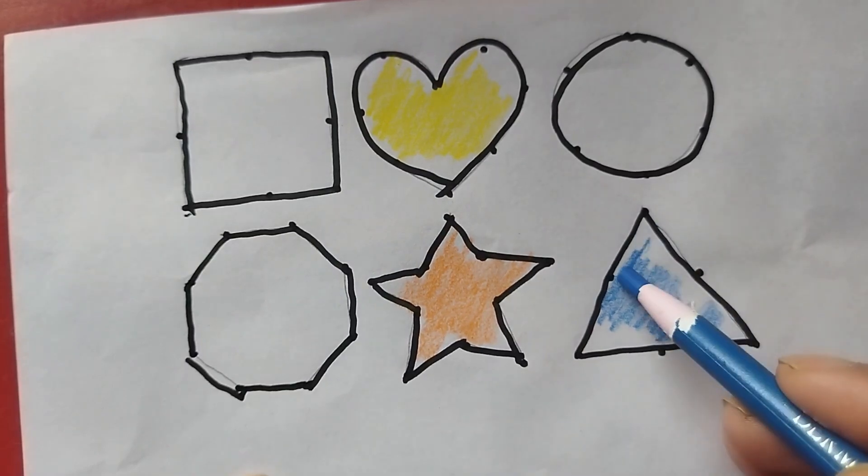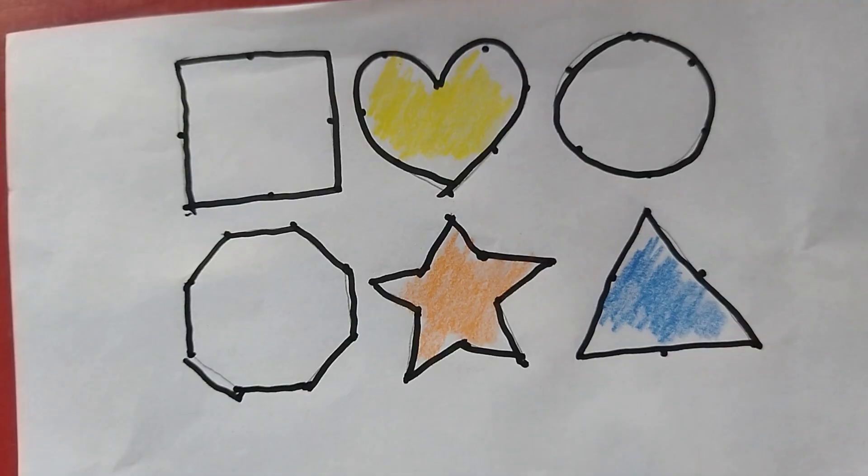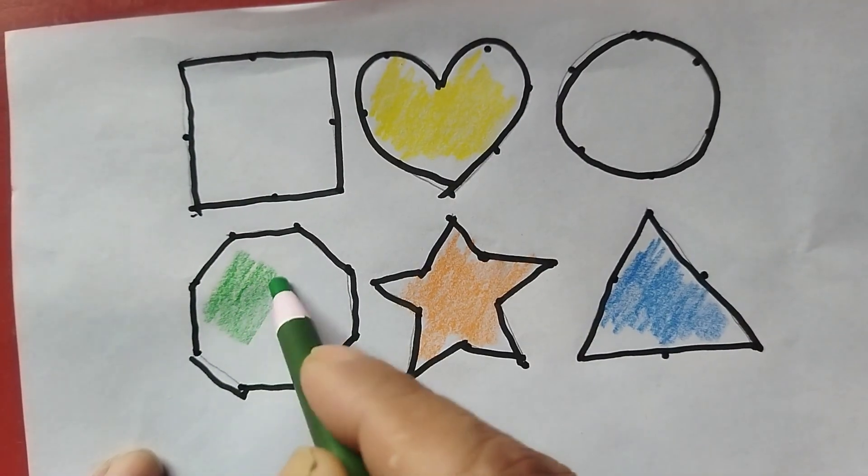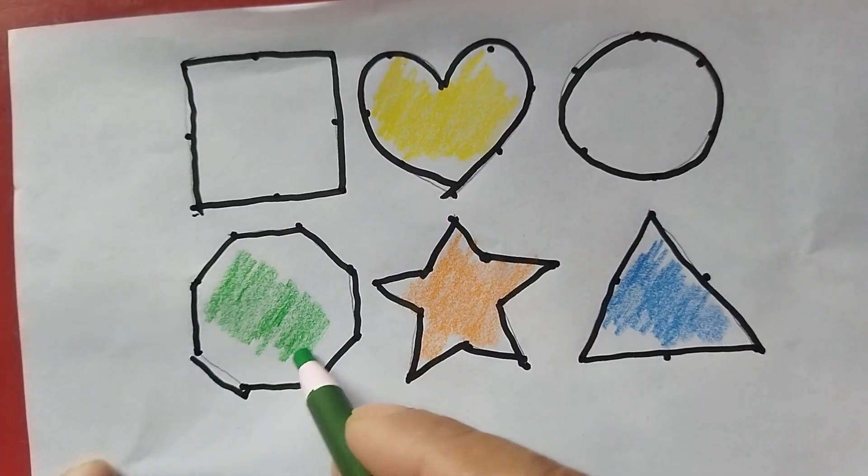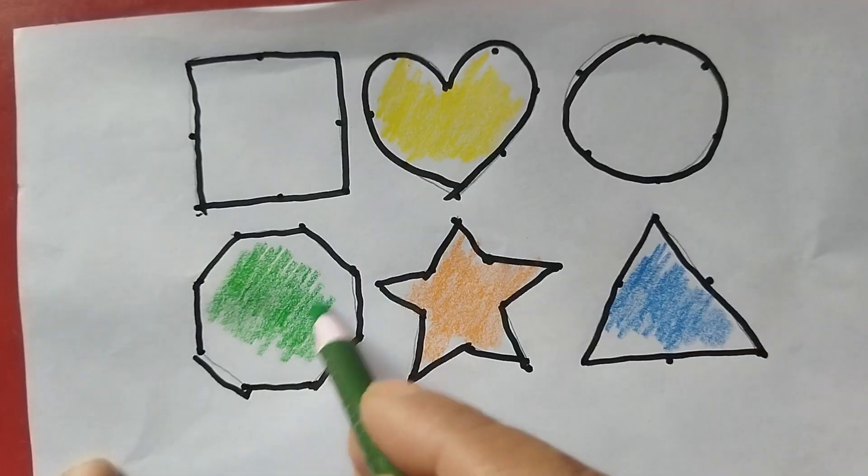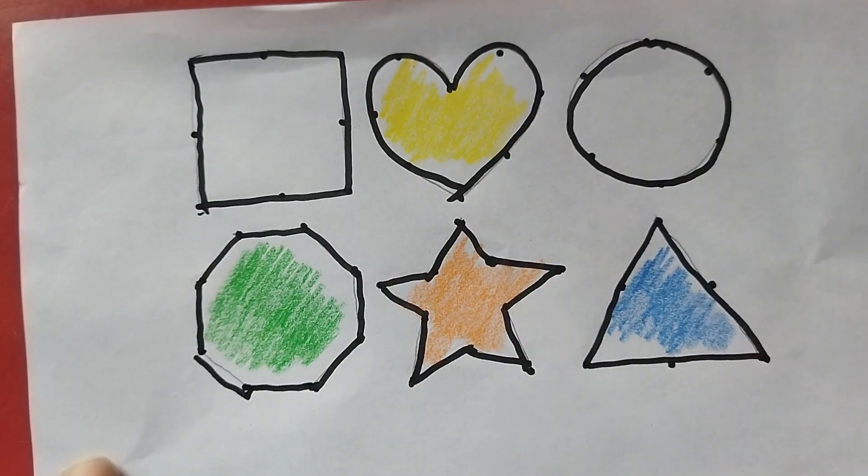This is blue color, triangle. Dark green color, octagon. This is dark green octagon.